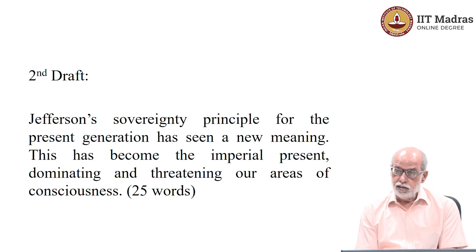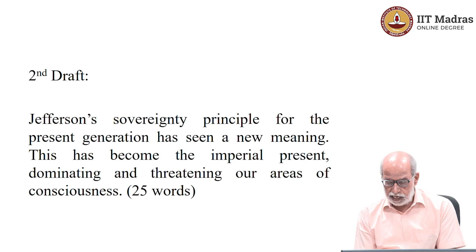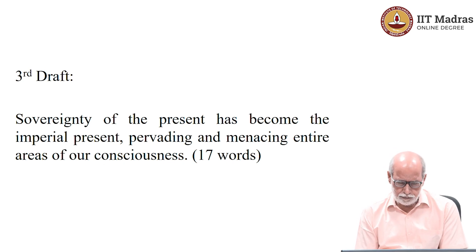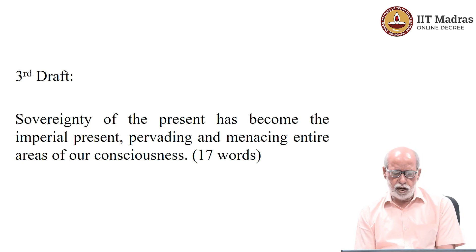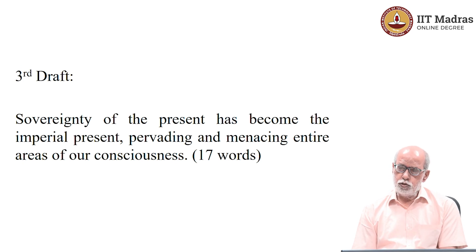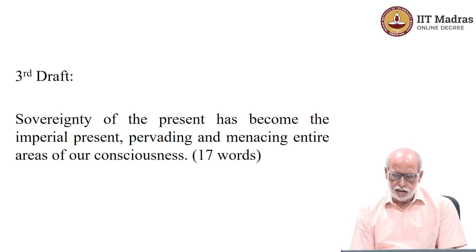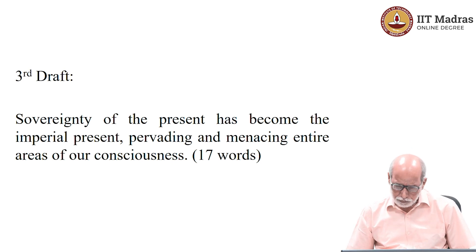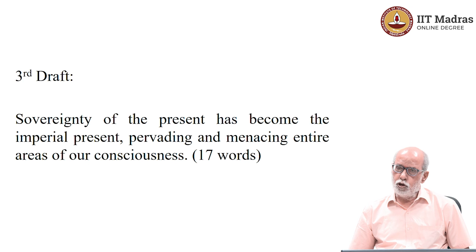We still have to bring it down from 25 words to 16, which means getting rid of another 8 words without losing meaning. And here we arrive at: 'Sovereignty of the present has become the imperial present, forbidding and menacing entire areas of our consciousness.' This uses only one third of the original words, and we haven't lost anything of the meaning — we are still saying that the present generation is so obsessed with the present that their entire consciousness is dominated by it.